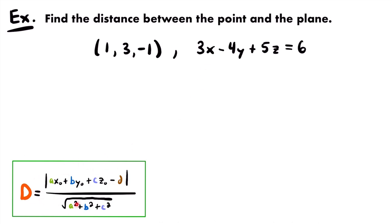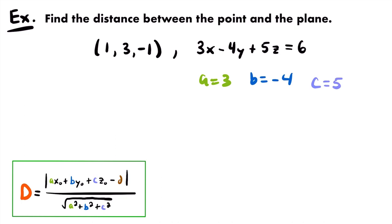Let's identify all the parts of the formula. x₀, y₀, and z₀ are just the coordinates of the given point, so we want to identify our values of a, b, c, and d. a, b, and c are the coefficients of x, y, and z from the plane equation, and d is the value those terms equal. So a = 3, b = -4, c = 5, and d = 6.